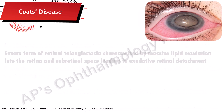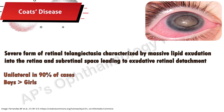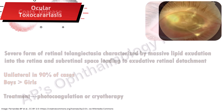Coats disease is a severe form of retinal telangiectasia characterized by massive lipid exudation into the retina and subretinal space, leading to exudative retinal detachment. It is usually unilateral and more common in boys. Treatment is by photocoagulation or cryotherapy.